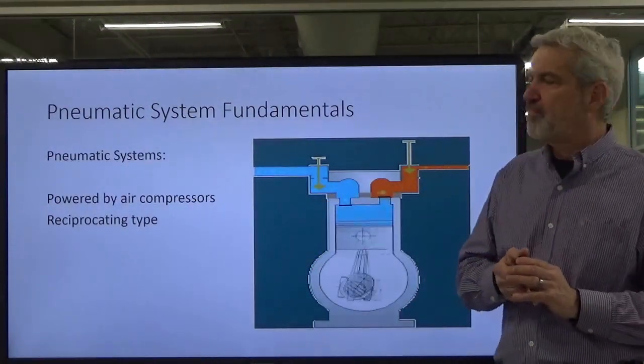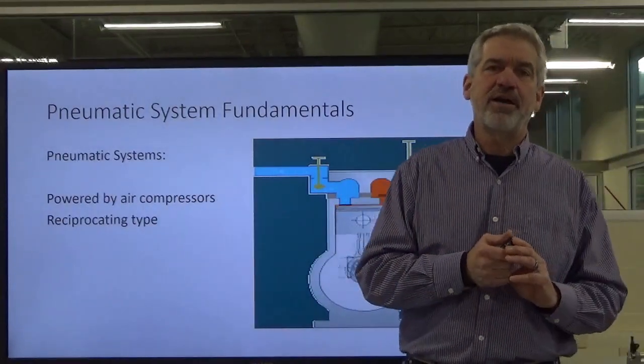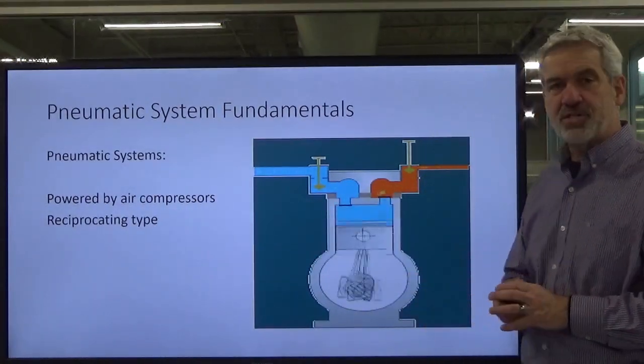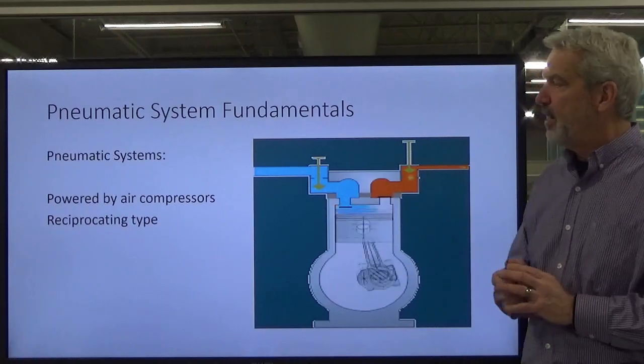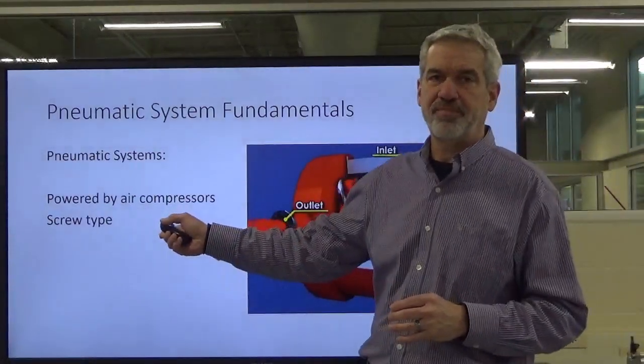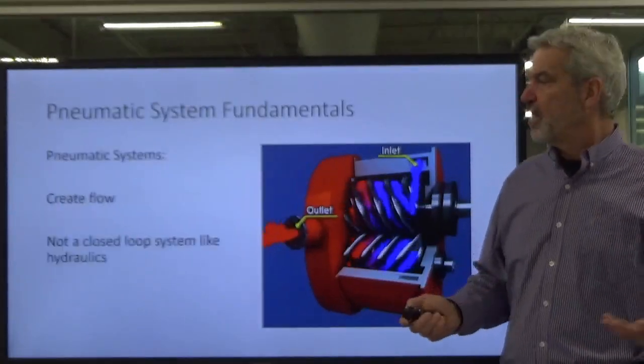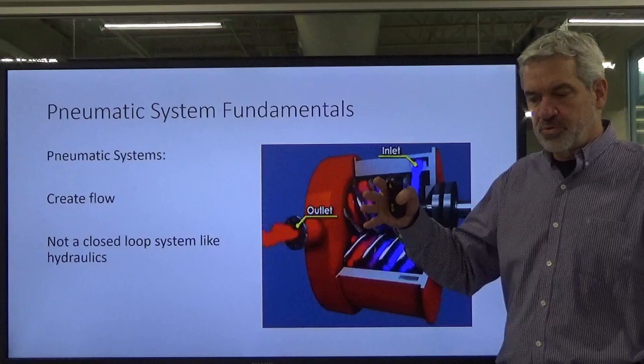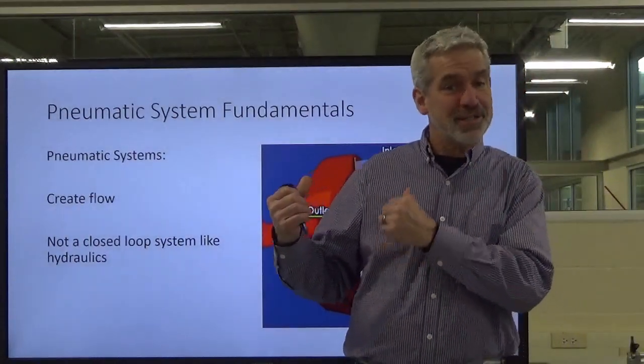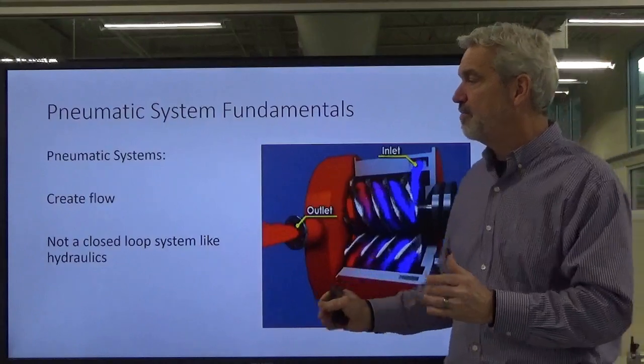We create flow with a couple of different types of air compressions. Number one is the reciprocating type. This probably reminds you of a gasoline engine with a single cylinder and a piston there. It's reciprocating, going back and forth. And there's another type, and it's known as the screw type. Now both of these take atmospheric air, and we will decrease its volume and increase its pressure. Mr. Boyle's law. See, I told you we were going to apply this stuff. So Mr. Boyle's law is already in effect. So we're creating flow.